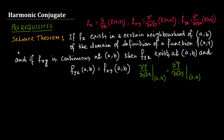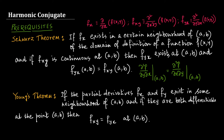It is sufficient that f_x (del f del x) and f_y (del f del y) exist and are differentiable, as stated in Young's theorem: if the partial derivatives del f del x and del f del y exist in some neighborhood of (a,b) and if they are both differentiable at (a,b), then del²f / del x del y equals del²f / del y del x at (a,b).